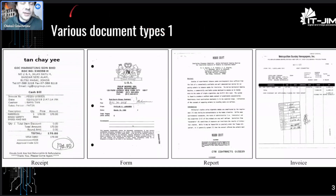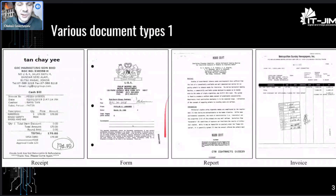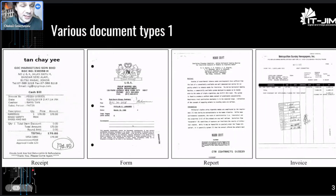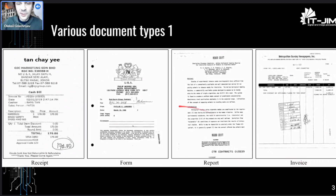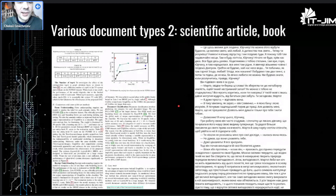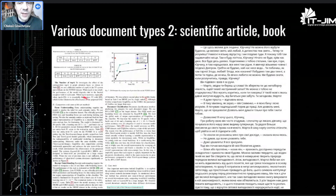There are many different document types. This is a figure from today's paper showing types such as receipt, form, report, and invoice. Of course, there are many other ones. I'll add, for example, scientific article and book, which are also documents.